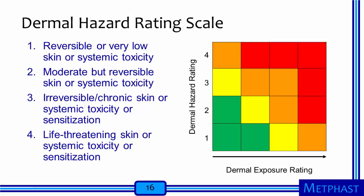We can use a dermal hazard rating scale from 1 to 4. A rating of 1 is the lowest, representing reversible or very low skin or systemic toxicity. A rating of 2 represents moderate but reversible skin or systemic toxicity. Level 3 is irreversible or chronic skin or systemic toxicity or sensitization. A rating of 4 represents life-threatening skin or systemic toxicity or sensitization.